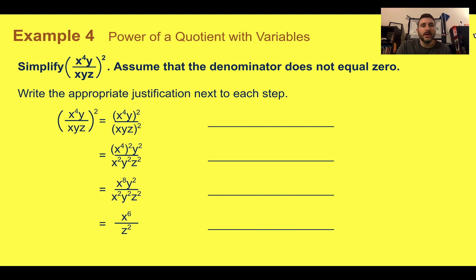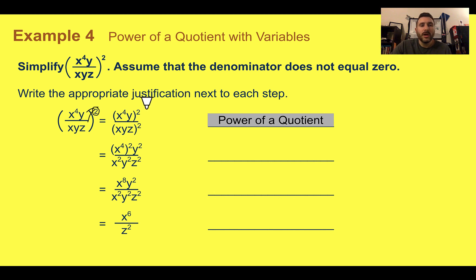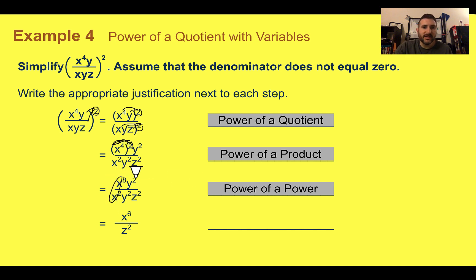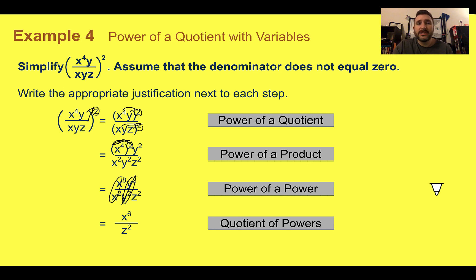Example 4, power of a quotient with variables. Simplify x to the 4th times y, over x times y times z, all to the 2nd power, and write the justification next to each step. First, we distribute the outside power to both the top and bottom — that's the power of a quotient. Then we take that exponent and apply it to everything inside the top and bottom — that's the power of a product — giving x to the 4th squared, y squared on top, and x squared, y squared, z squared on the bottom. Multiplying out x to the 4th squared is a power of a power, giving x to the 8th. Finally, using the quotient of powers: x to the 8th over x to the 2nd is x to the 6th; y squared over y squared cancels to 1; and we're left with x to the 6th over z squared.